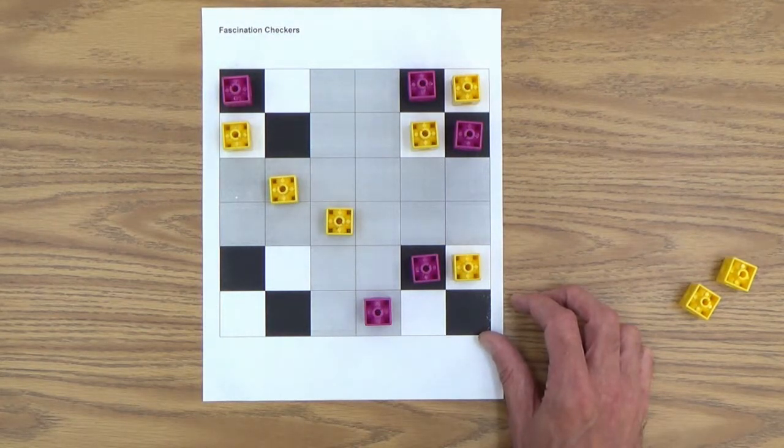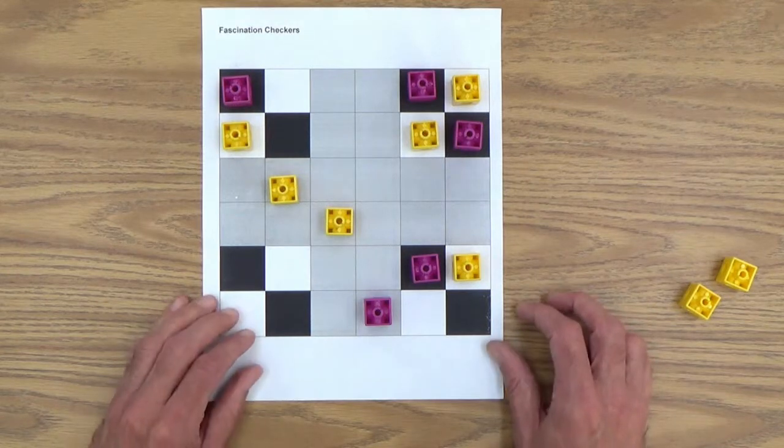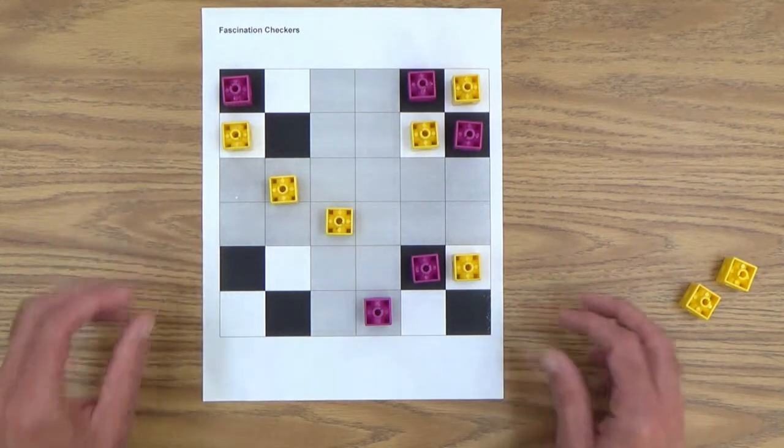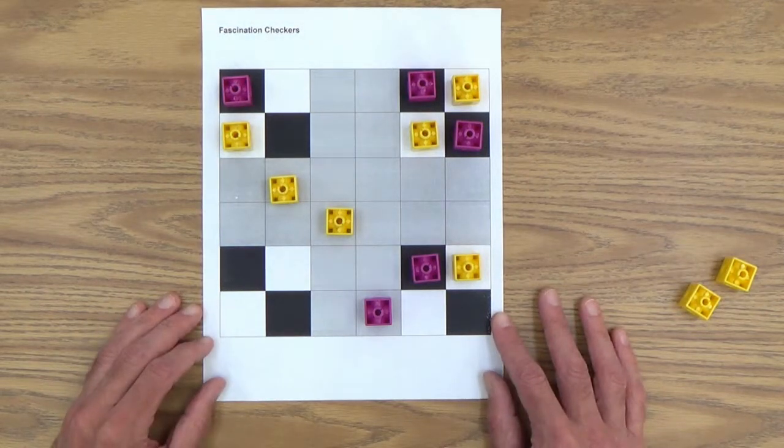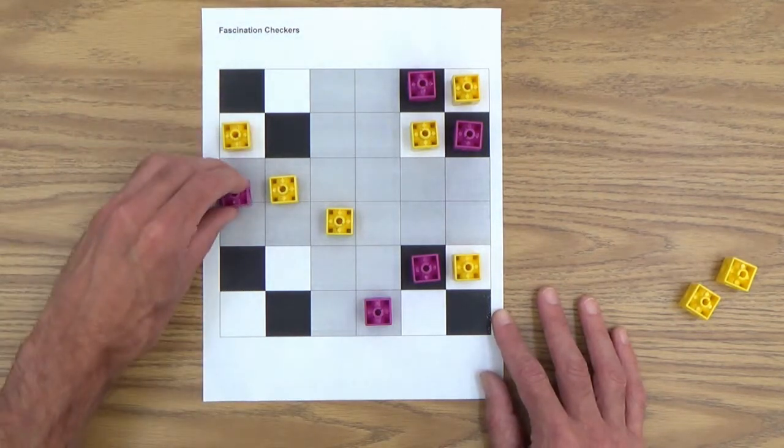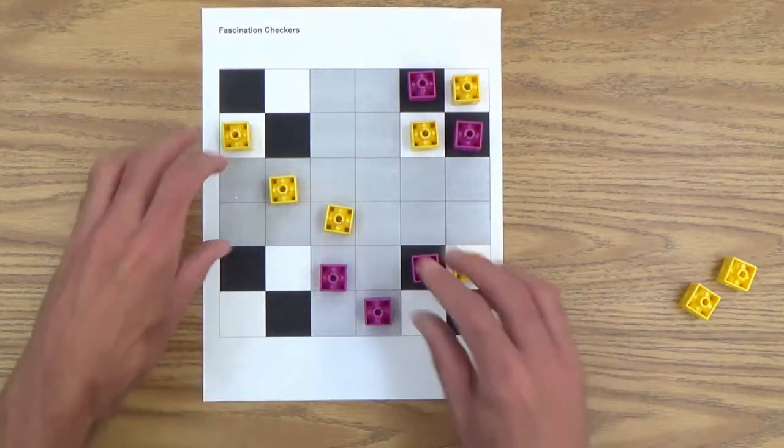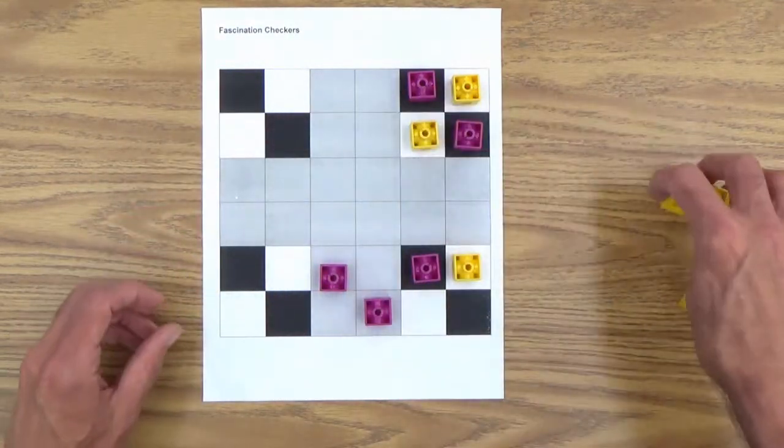Okay. So now it's my turn again. Purple is moving. Oh, my gosh. I see like a triple jump for purple. Watch this. One, two, three. Oh man. Look at that.